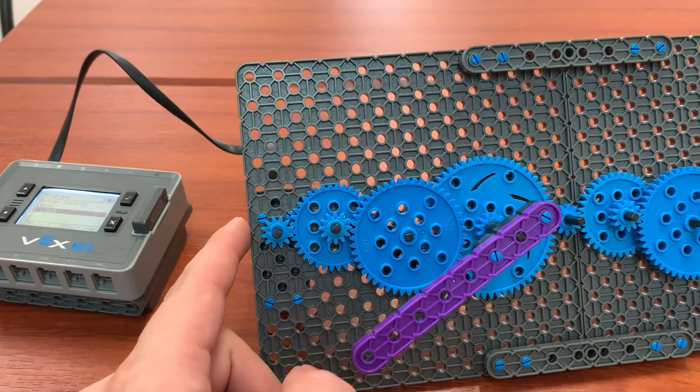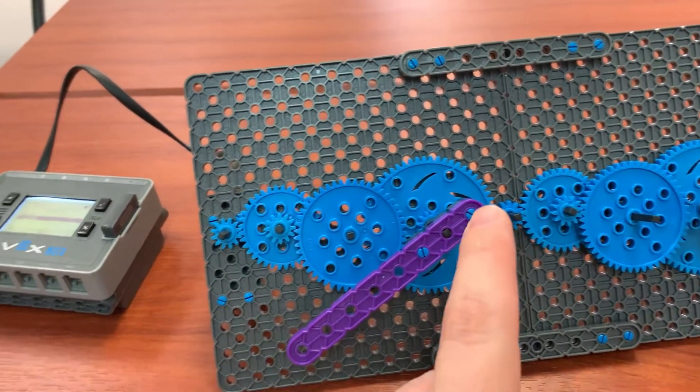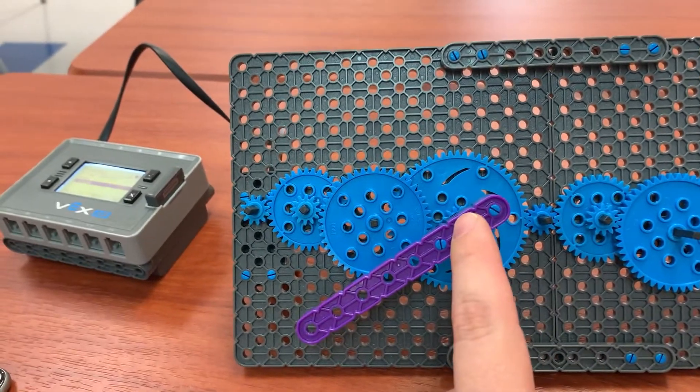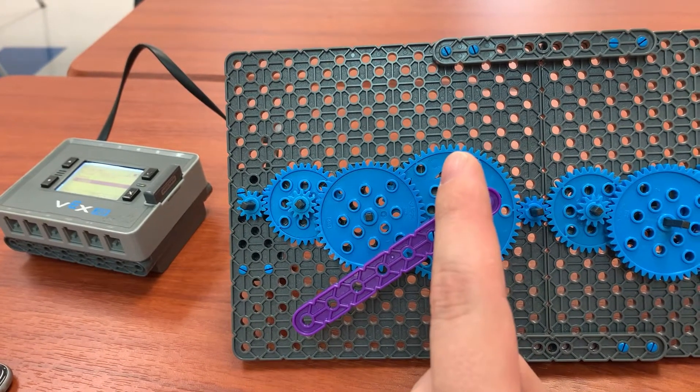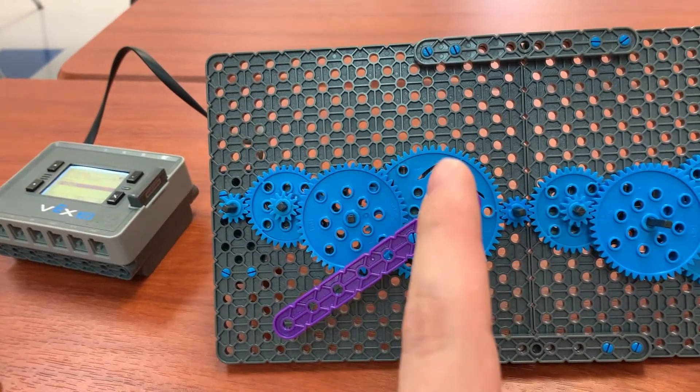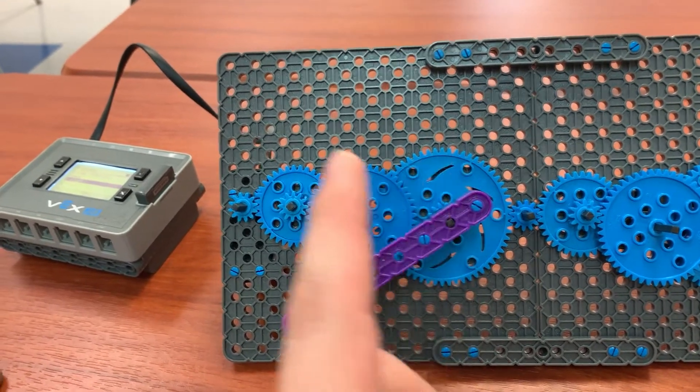And when we tested it with 60 RPMs and ran the stopwatch, we found that the minute hand was taking just a little bit longer to reach the one full rotation than it should. It was taking about four seconds longer to reach.